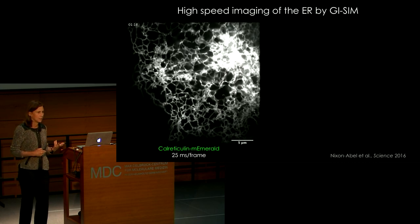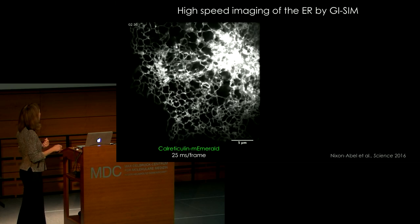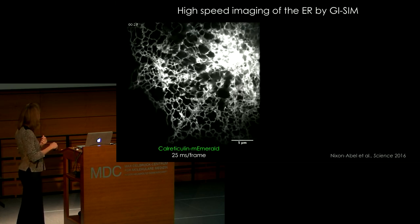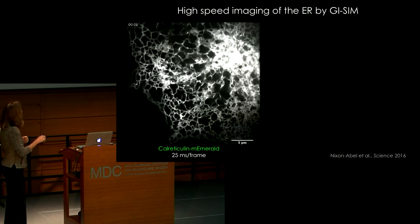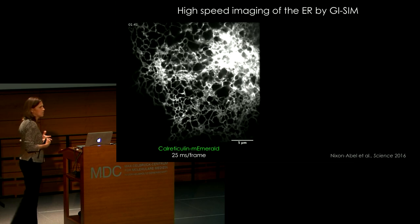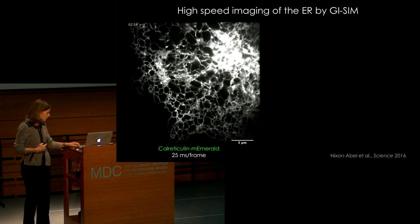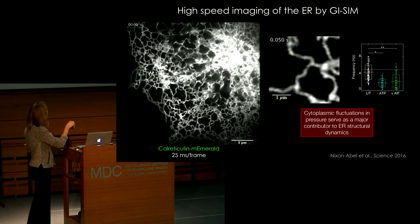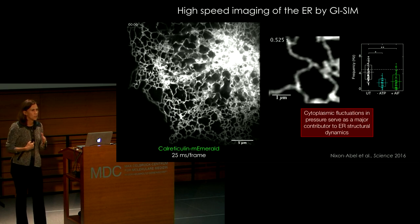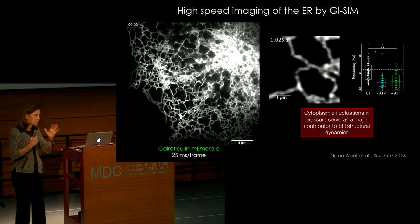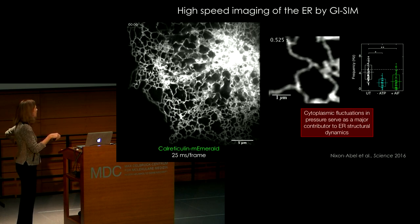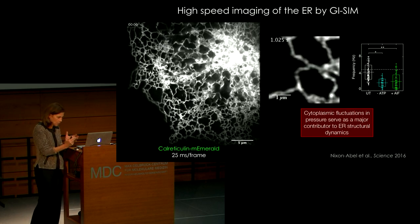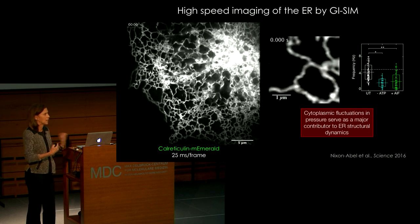Let's start with the endoplasmic reticulum. This is a grazing incidence structural illumination microscopy time-lapse sequence where we're looking at a resident protein of the ER, calreticulin, at 25 milliseconds per frame. What you can see from these movies is the dynamism of the ER that we had not previously appreciated. If you zoom in, you can see the tubular meshwork of the ER undergoing an oscillatory motion we hadn't been able to appreciate previously.